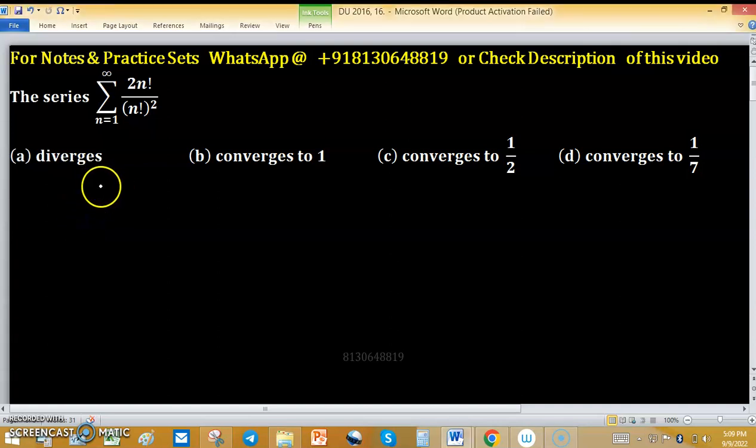The series summation 2n factorial upon n factorial square. The options are: (a) diverges, (b) converges to 1, (c) converges to 1/2, and (d) converges to 1/7.